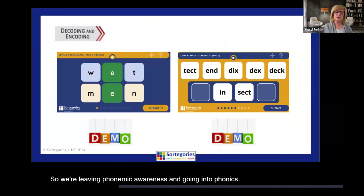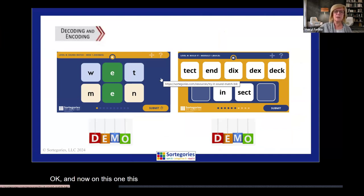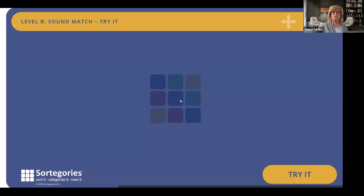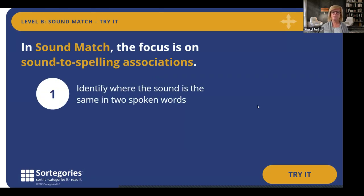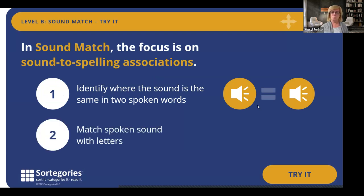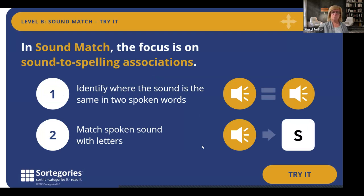And now on this one, this is another demonstration. We're getting into Sound Match for level B. I'm going to click through this just to get us through it a little bit faster. In the Sound Match, the focus is on sound to spelling associations. In the first match, the focus is on where the sound is the same in two spoken words. The second match is between the spoken sound and a letter or letters that are used to spell the sound. Before you try it, click here to see an example. When you are ready, click try it.